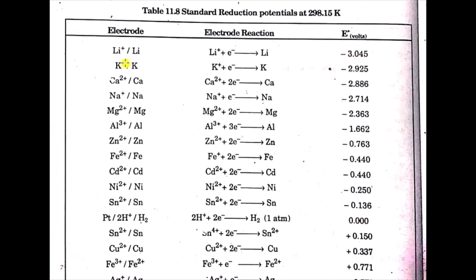The next electrode is potassium. When a potassium ion gains an electron it shows reduction and is converted into potassium metal. Its reduction potential is minus 2.925 volts.